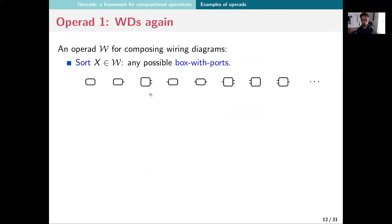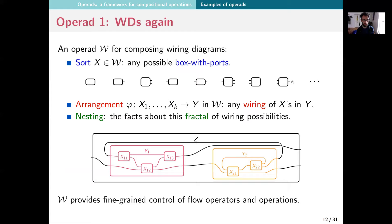Operad number one: wiring diagrams. The sorts are boxes with ports, and an arrangement is any wiring of X's in a Y. The nesting is about this kind of fractal of zooming in and in and seeing these arrangements all the way down. The wiring diagram operad W provides control of flow operators and operations — like how things are going to move between stuff. If I've arranged things like this and I've got some machines in each of these, what does that do to create a machine here?